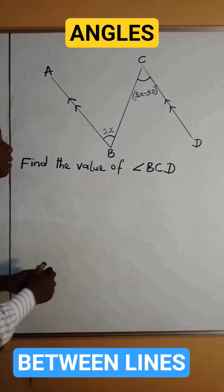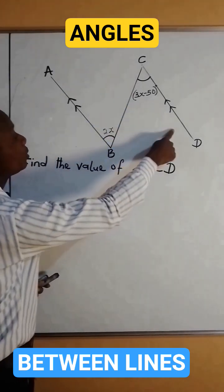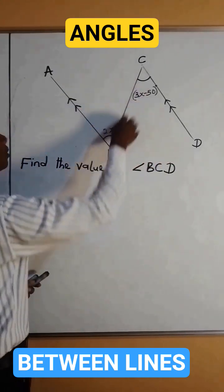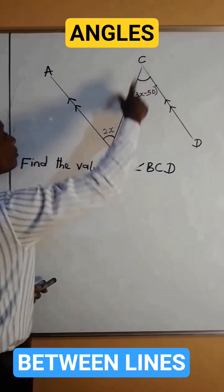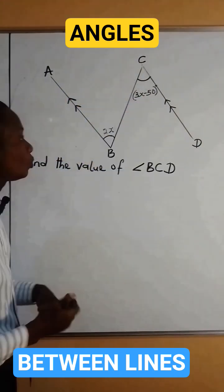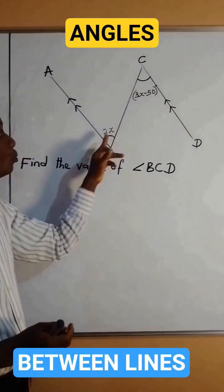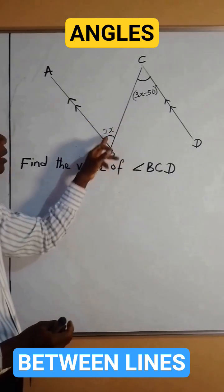First we need to understand the rule. The rule is that any line crossing two parallel lines, known as a transversal, leaves alternate angles on opposite sides. So you can see that these two angles are alternate angles.